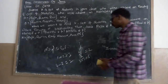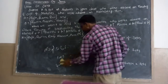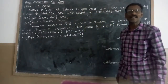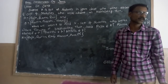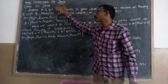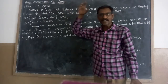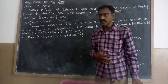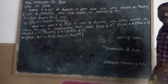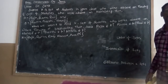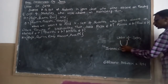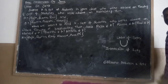In sets also we have some operations. Those are called union and intersection, and the difference between two sets. For union and intersection, they are using some symbols. For union, we are using the symbol U.